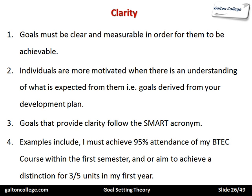Examples of clear goals include: 'I must achieve 95% attendance on my BTEC course within the first semester' and 'I aim to achieve a distinction in 3 to 5 units in my first year.' More specifically: I must improve my attendance, ensure I read what's required, do the assignments on time, and try to improve my grades. That is a very clear set of objectives.